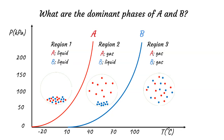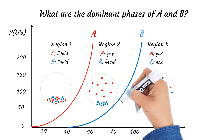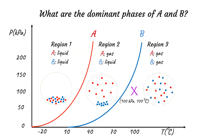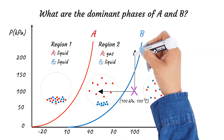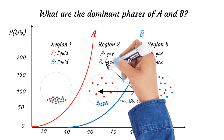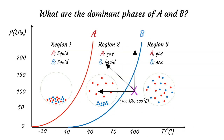Now let's consider how to separate substance A from B if initial conditions are given. For example, let's assume that the initial pressure is 100 kPa and the initial temperature is 100 degrees Celsius. Under these conditions we are in Region 3, where both substances A and B are in the gas phase. To separate A from B, we need to be in Region 2, where A is in the gas phase while B is in the liquid phase. We can go from Region 3 to Region 2 by decreasing the temperature while the pressure is constant, by increasing the pressure while the temperature is constant, or by decreasing the temperature and increasing the pressure.